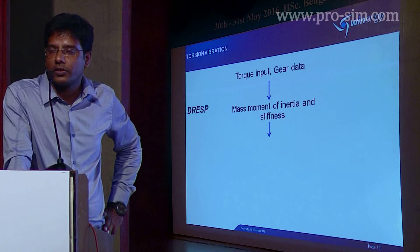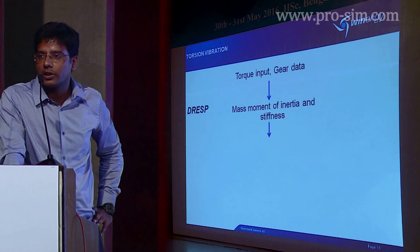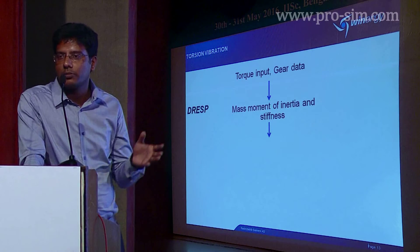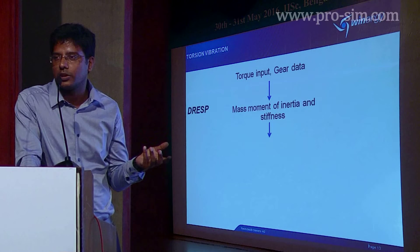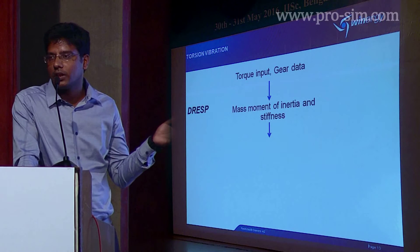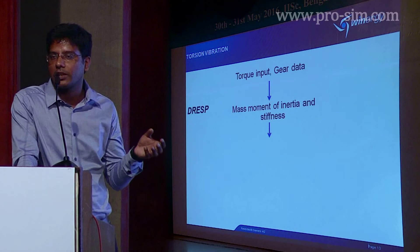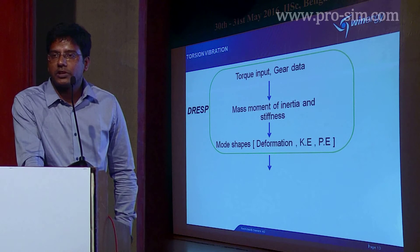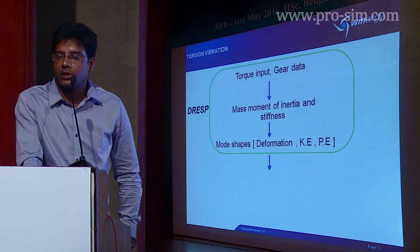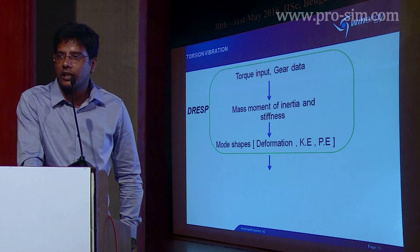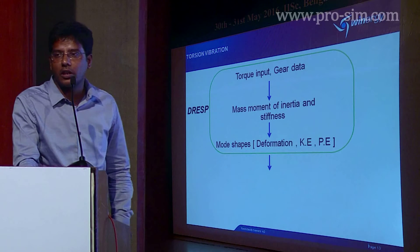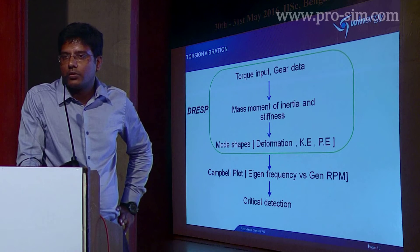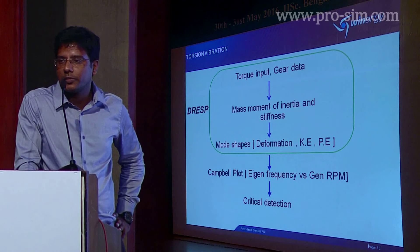For the DRESS model we also define the mass moments of inertia for each and every component across the turbine — from the rotor blades to the generator. Since we are specifically focused on the gearbox, we go into detail about defining the mass and stiffness of each planet as well as the shafts. The outcome is not specifically about deformation behavior, but about kinetic energy and potential energy — where kinetic energy relates to how mass moment of inertia behaves, and potential energy defines the stiffness behavior of the components.